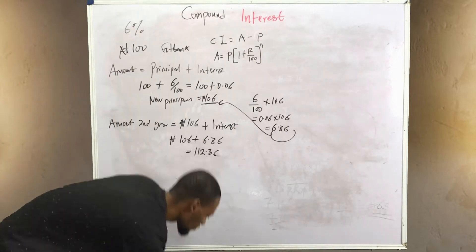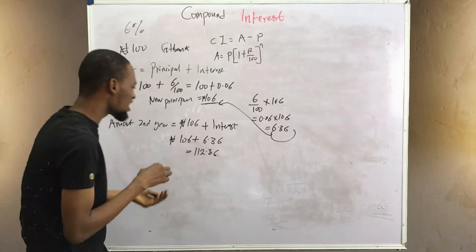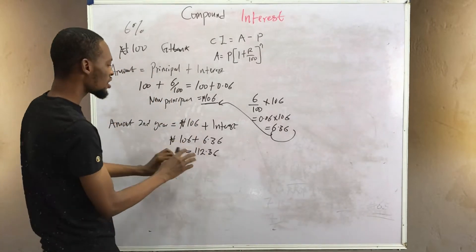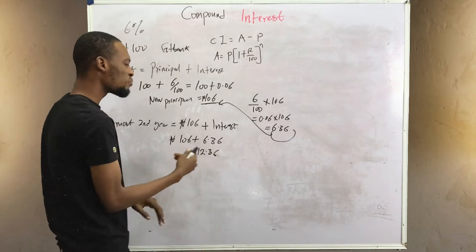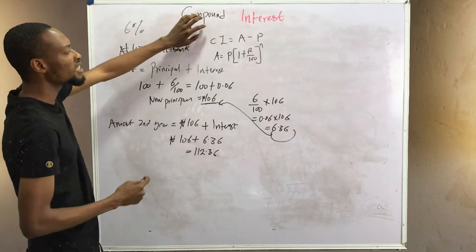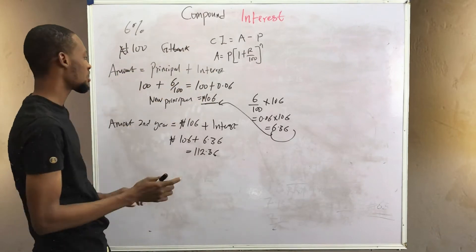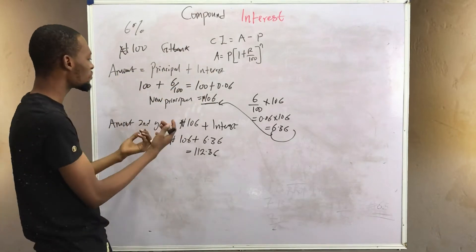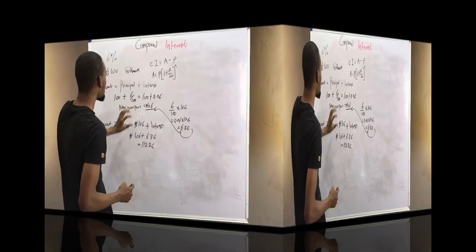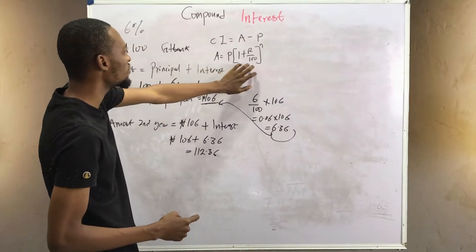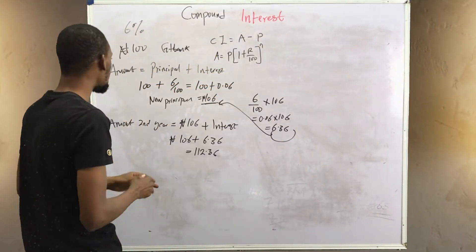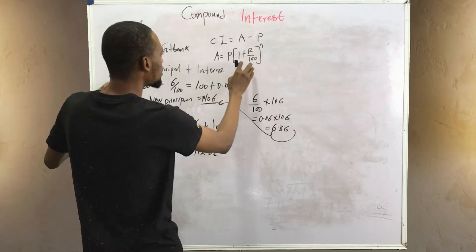For the third year, the new amount will again be the current principal plus interest on that principal. That's why in compound interest, interest is charged on interest — it's not the same as simple interest. We can also solve this using a formula.